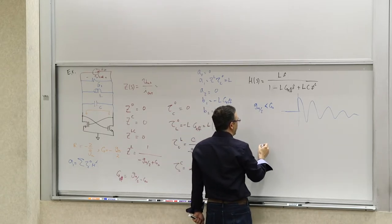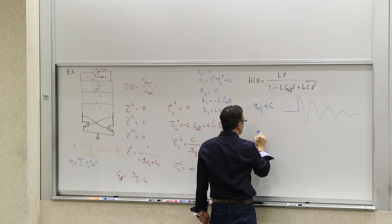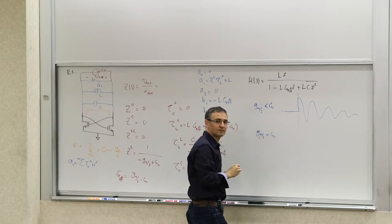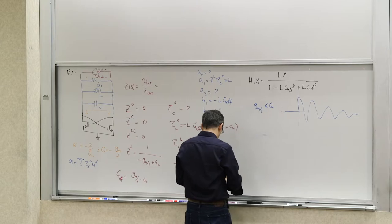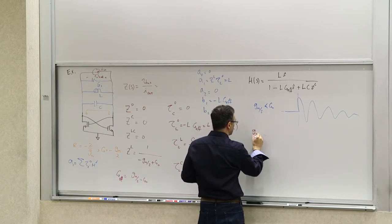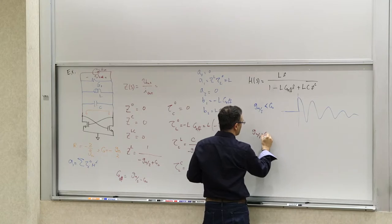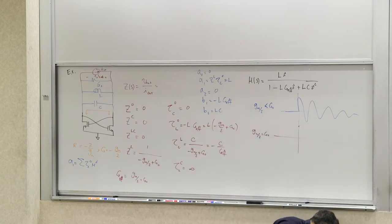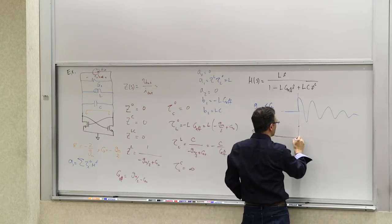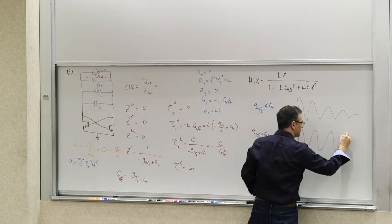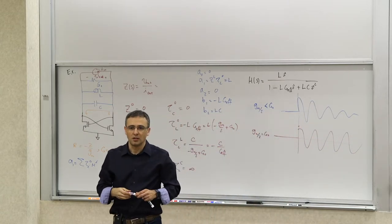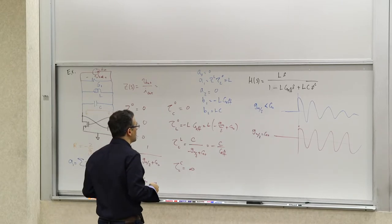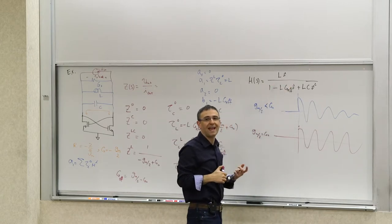If gm/2 is exactly equal to g_0, the middle term disappears entirely. The impulse response is a sustained sinusoid — it neither decays nor grows, because there is no loss or damping term.